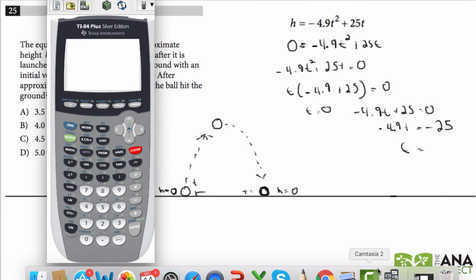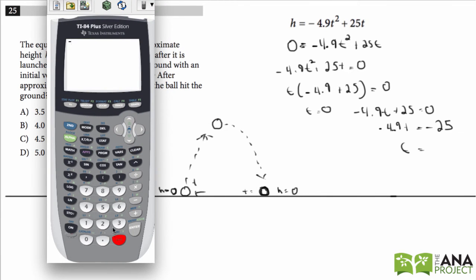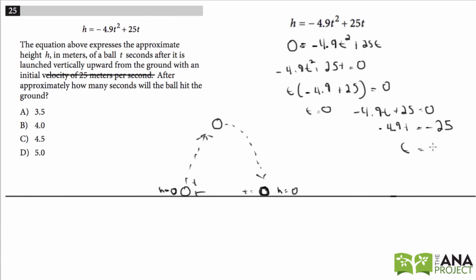So let's just get our calculator. Negative 25 divided by negative 4.9 equals 5.10, 5.1 seconds. So that's closest to answer choice D.